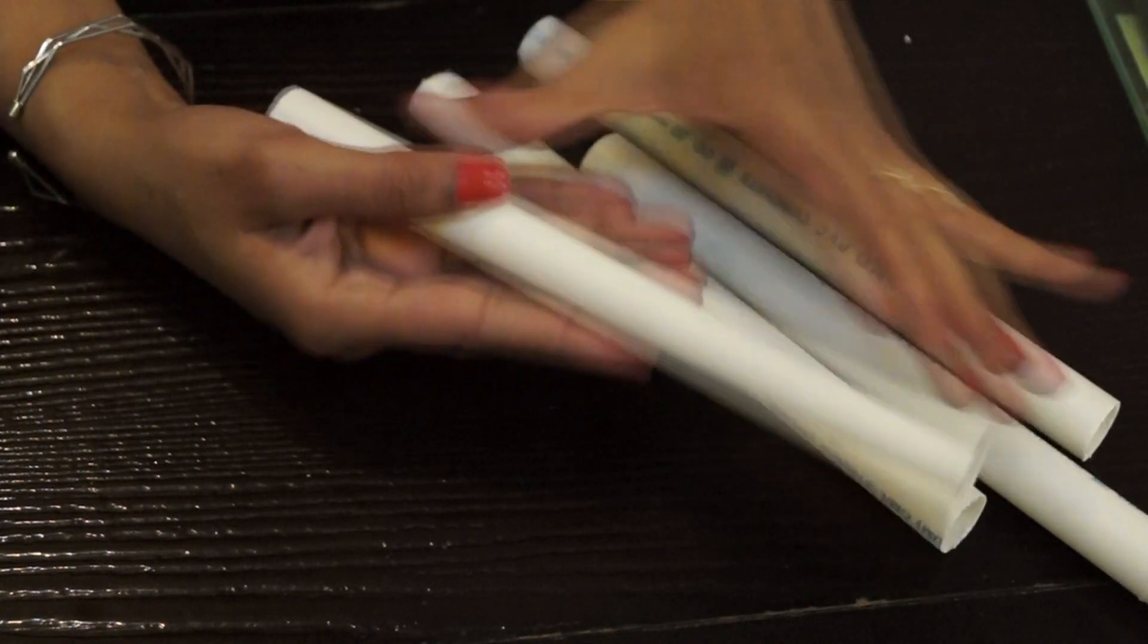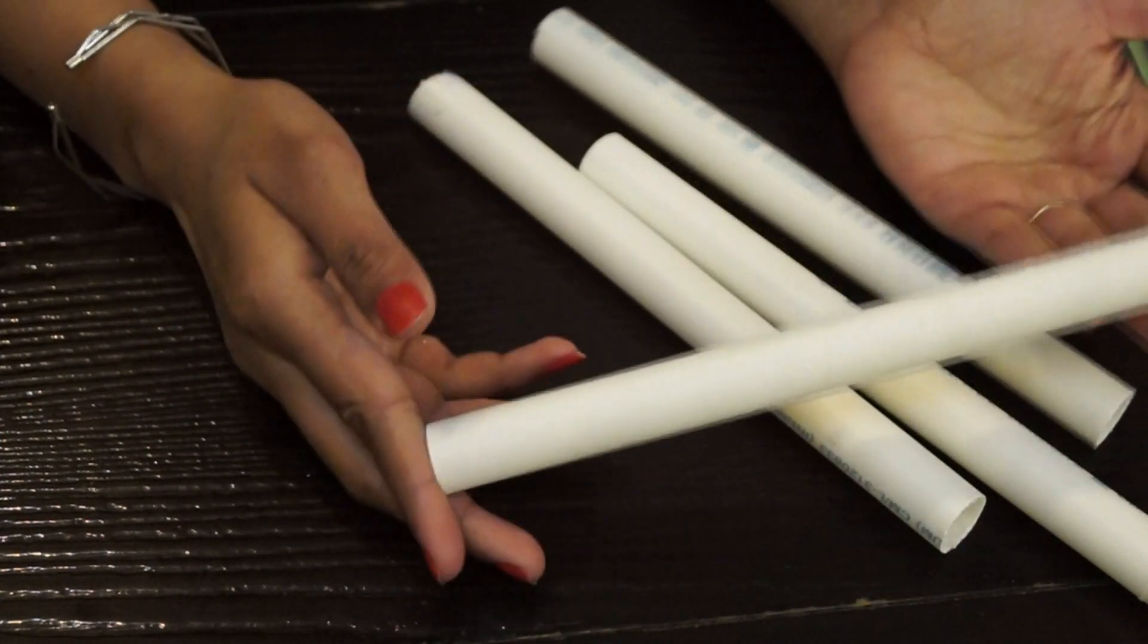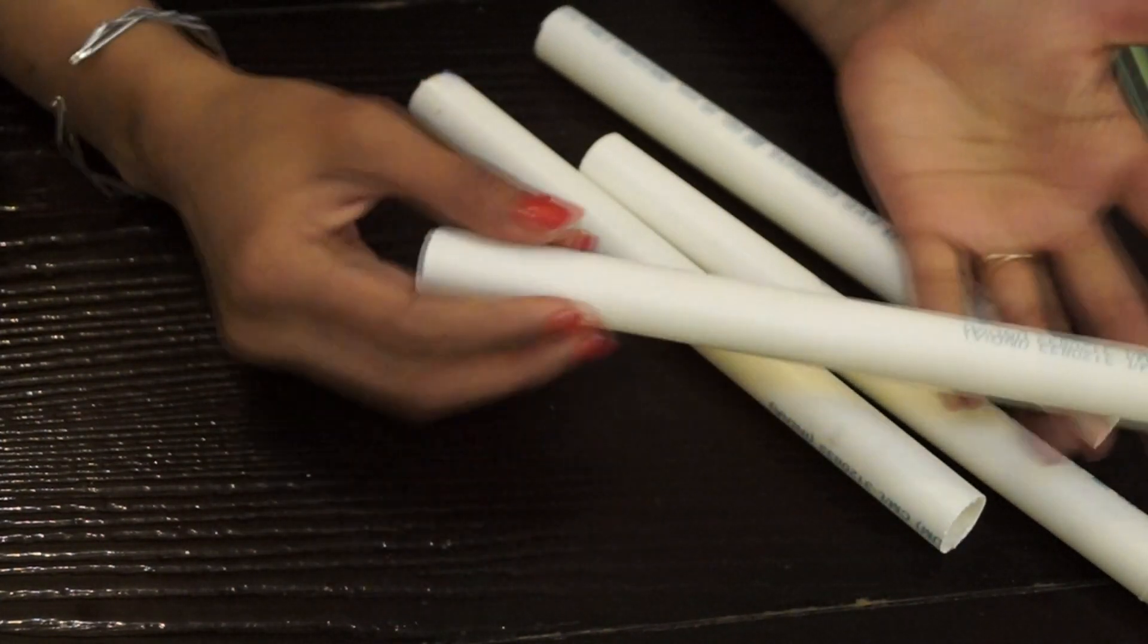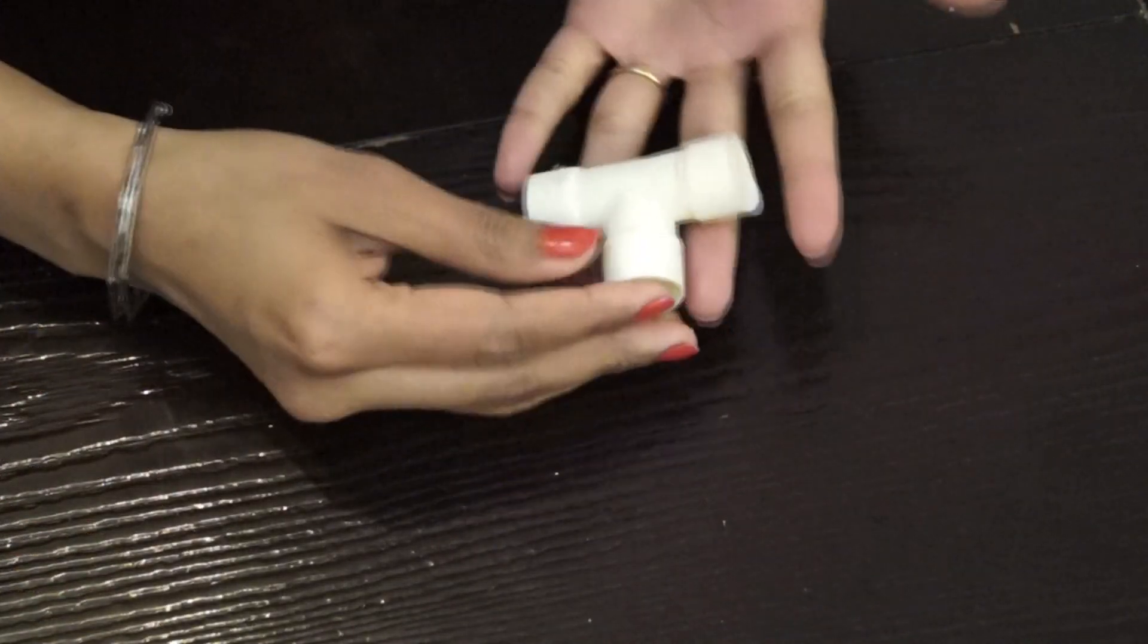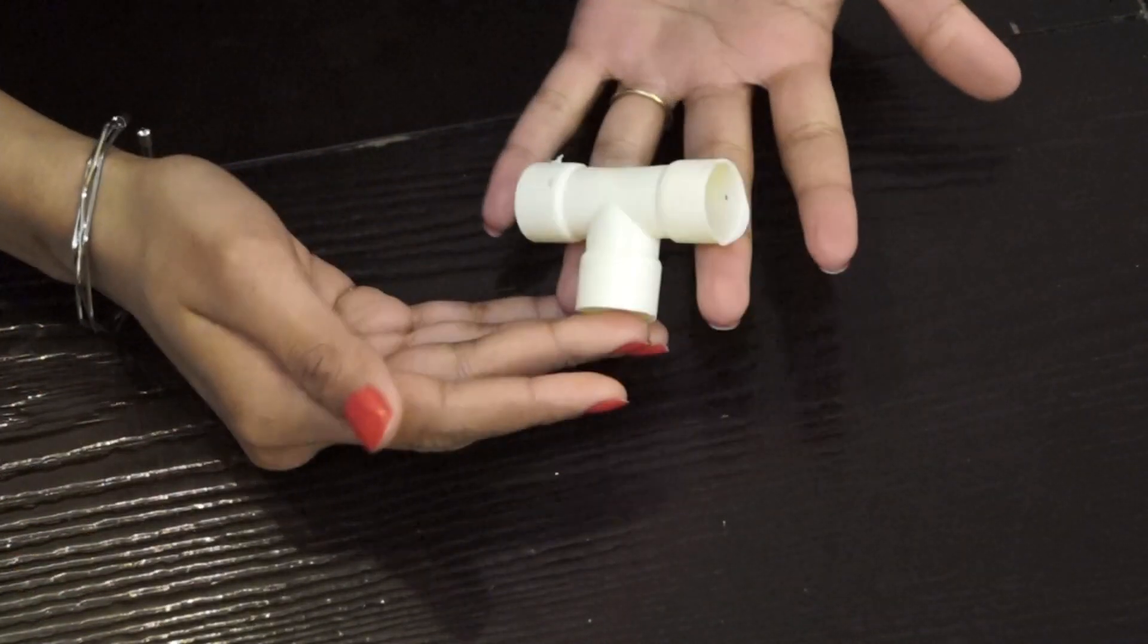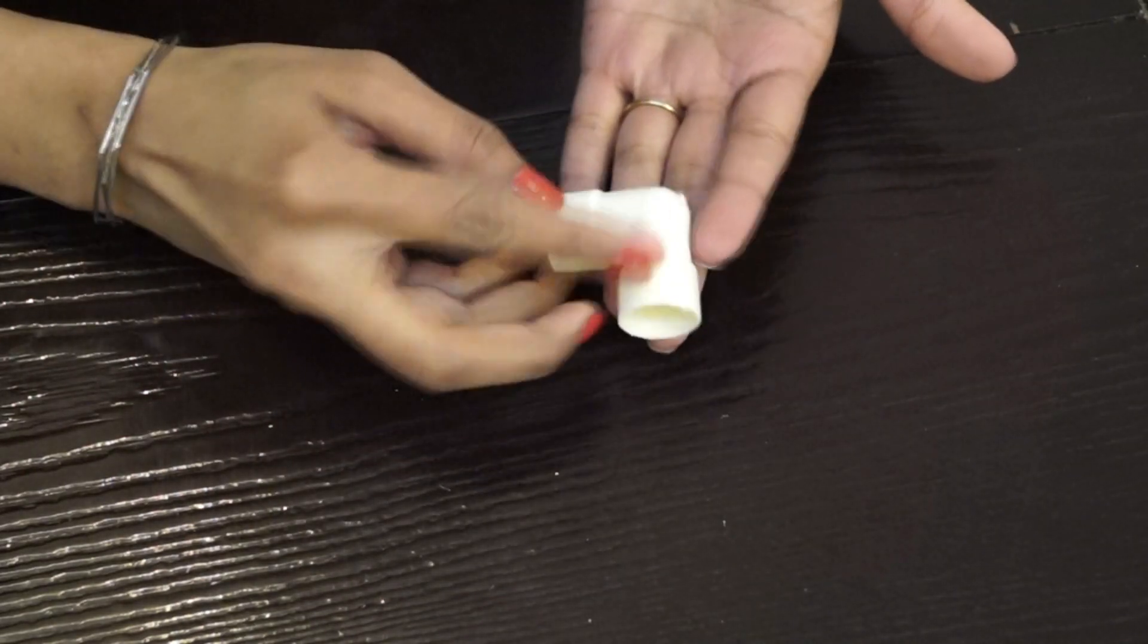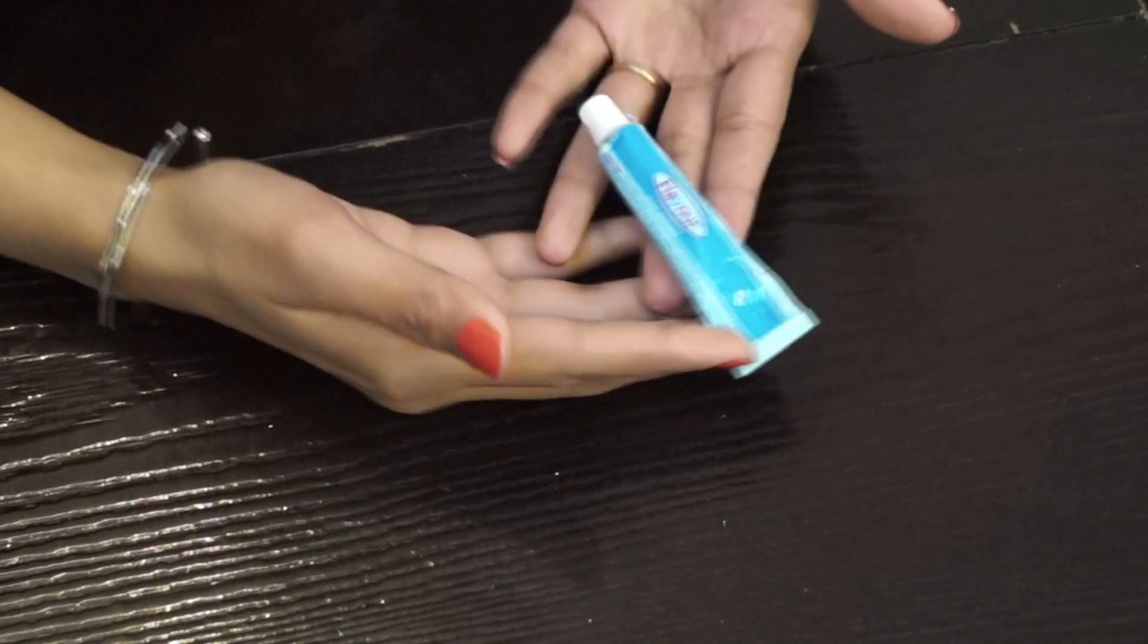So first we need PVC pipe. Mine is of 1.5 inch. You can choose whatever size you want to. Next we need a T-joint. This is also 1.5 inch. And a bend. All these things you can get from a hardware shop.